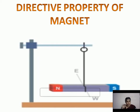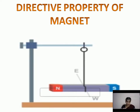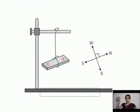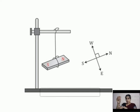Today we are going to see another experiment for the same property — a freely suspended magnet. I have one bar magnet. I am going to tie this bar magnet with a thread. Now I have tied this magnet with a thread. This shows the north and south pole — this is the north pole and this is the south pole. This shows the north and south pole of the earth.